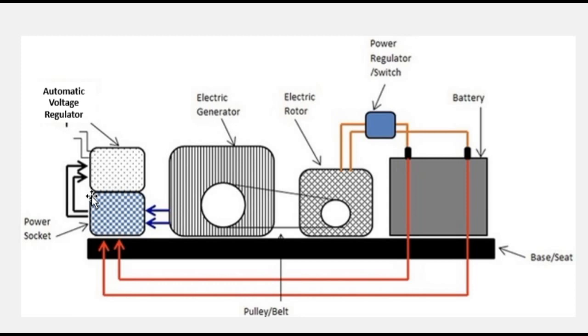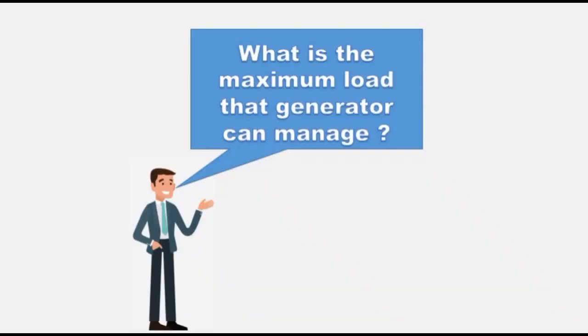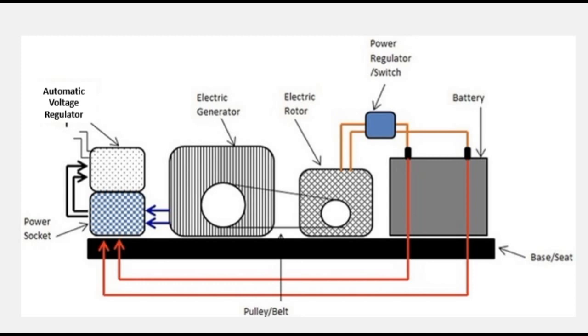The question is, what is the maximum load that a generator can manage? The maximum load you can manage depends on the capacity of the generator. Simply, the maximum load a generator can carry all depends on the capacity of the generator. So if a generator is 10 KVA, your maximum load should be at least 7 KVA because 1 KVA should be used as a reserve.